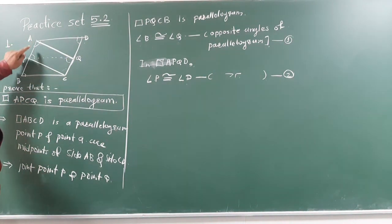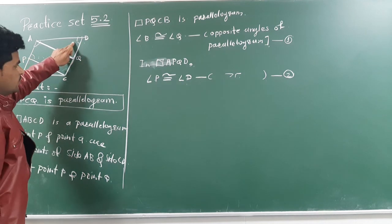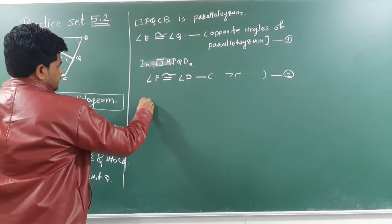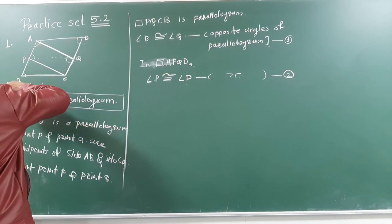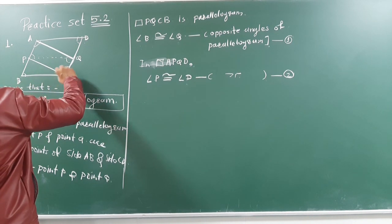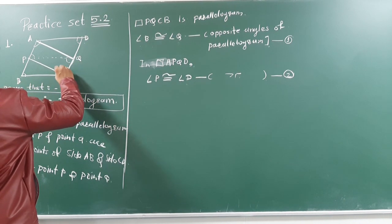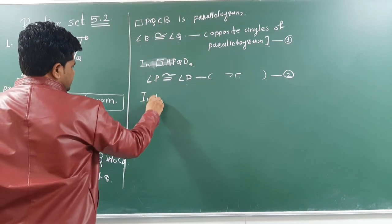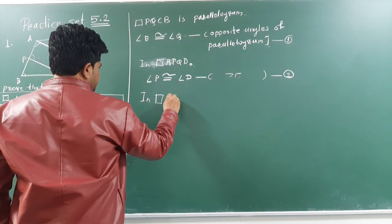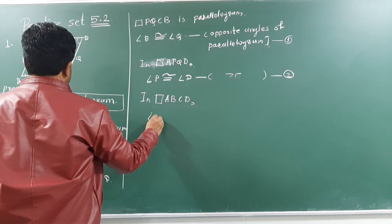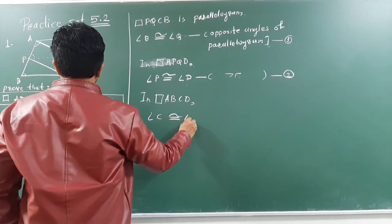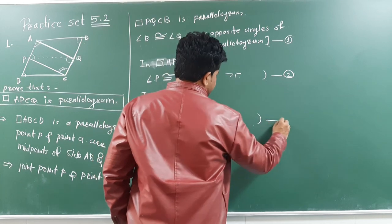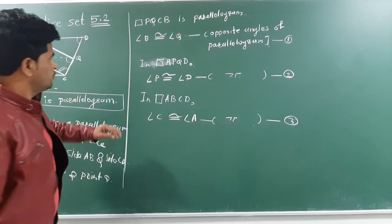From equations 1 and 2, we can say that: in quadrilateral ABCD, angle C is congruent with angle A — this is the opposite angle of a parallelogram. This is equation number 3.